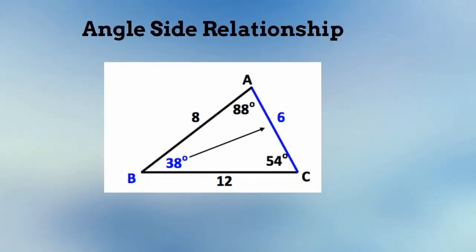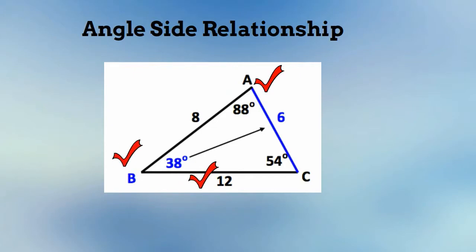Angle-Side Relationship: since angle A is the largest angle, side BC will be the largest length. And since angle B is the smallest angle measure, side AC will be the shortest side.